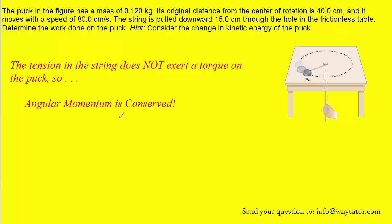That might warrant further explanation. How do we know that the tension in the string is not exerting a torque on the puck? Well, if we look at the diagram, we can see that the tension in the string would be pointing downward as this person pulls down on the string.